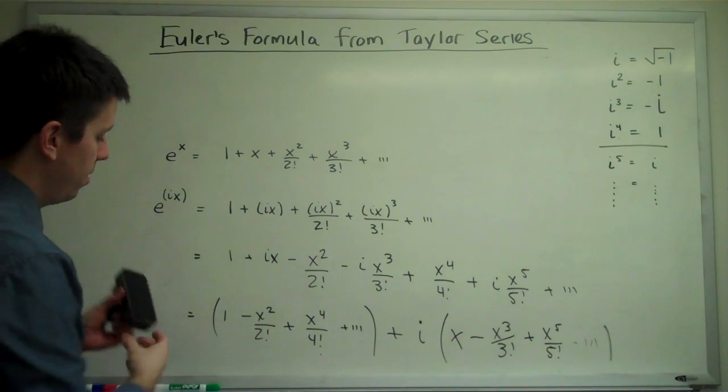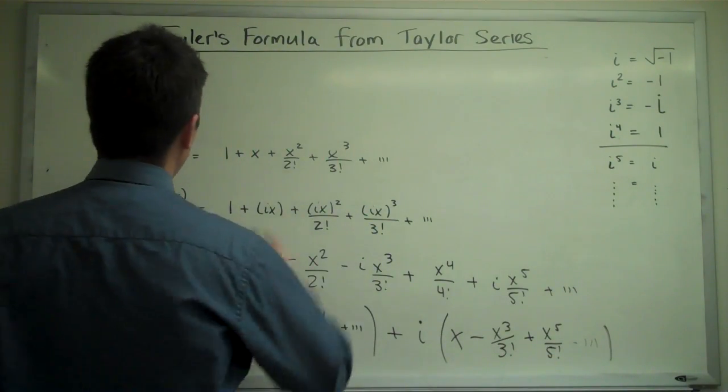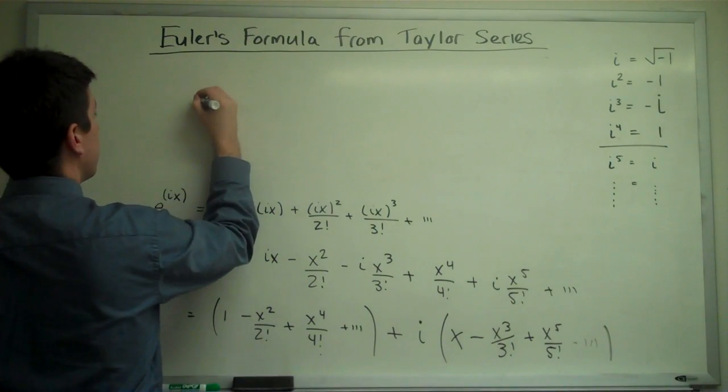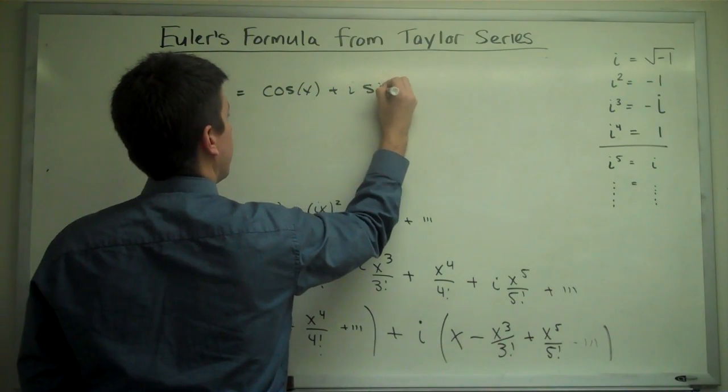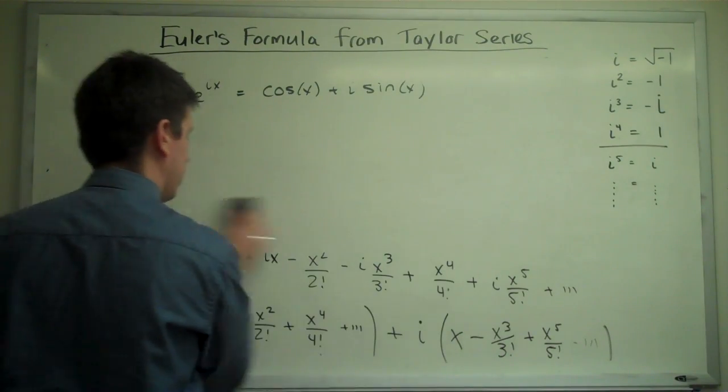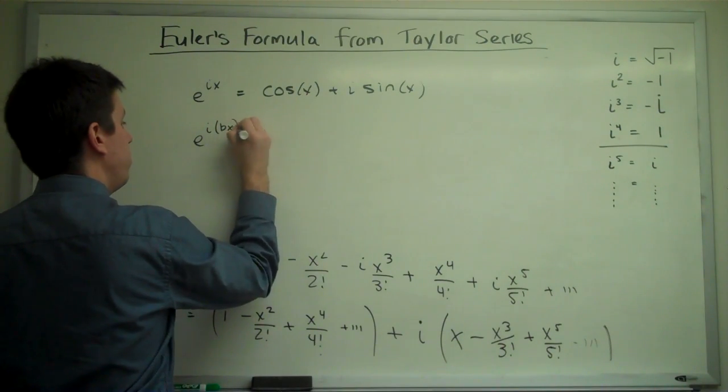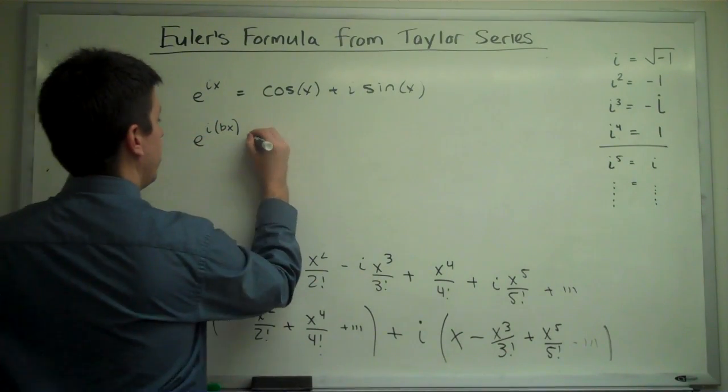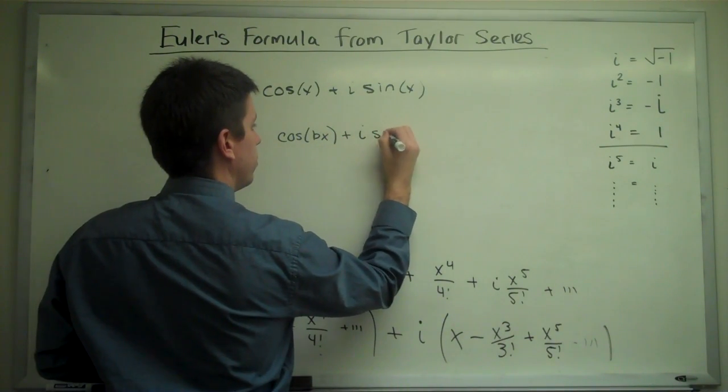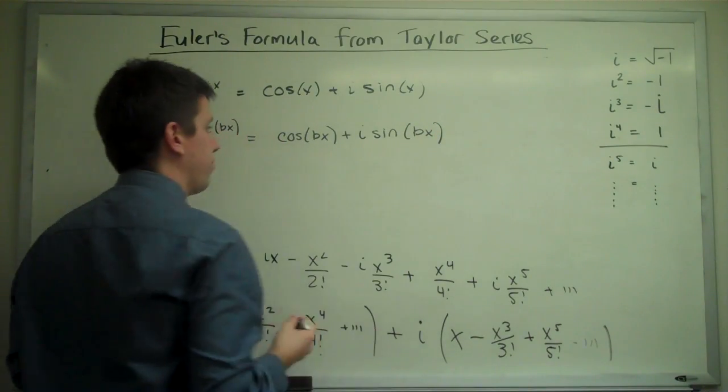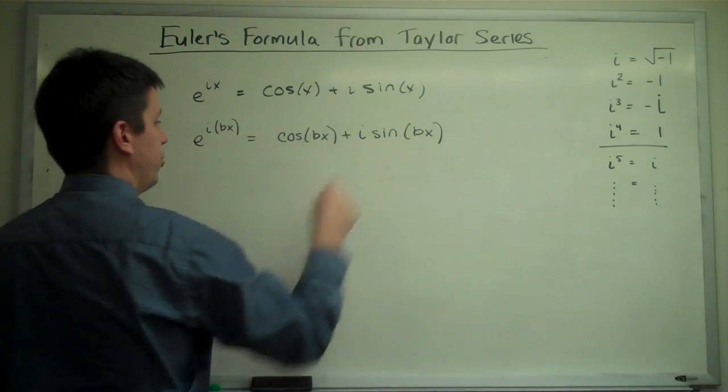Now this should look familiar. This is just the Taylor series for cosine x, and this is just the Taylor series for sine x. So we arrive at Euler's famous result: e to the i x is cosine x plus i sine x. And e to the i b x, simply replace the x with a b x, we would obtain cosine b x plus i sine b x. So this is a very common result. It allows us to turn pure imaginary exponentials into sines and cosines.